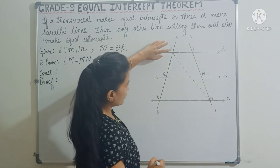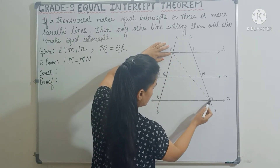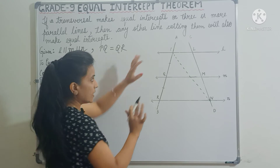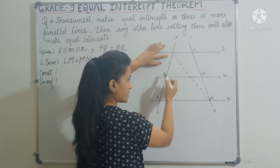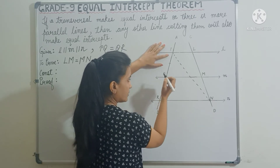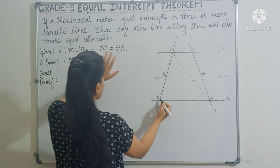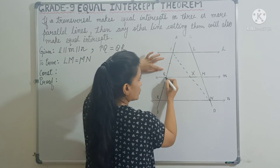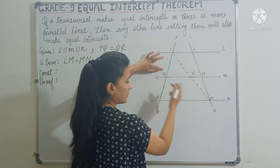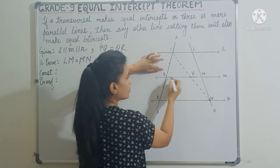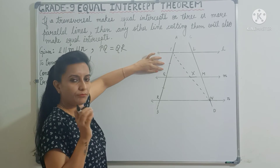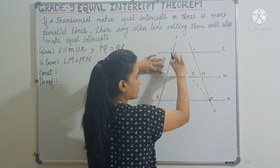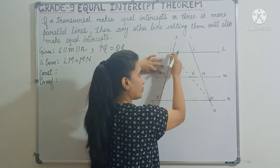So now we got triangle PRN and triangle PLN. In triangle PRN, Q is the midpoint of PR — that is given — and QX is parallel to RN, because these three lines are parallel to each other. So according to the converse of the midpoint theorem, QX will bisect PN. This means PX will be equal to XN, or in other words, X is the midpoint of PN.